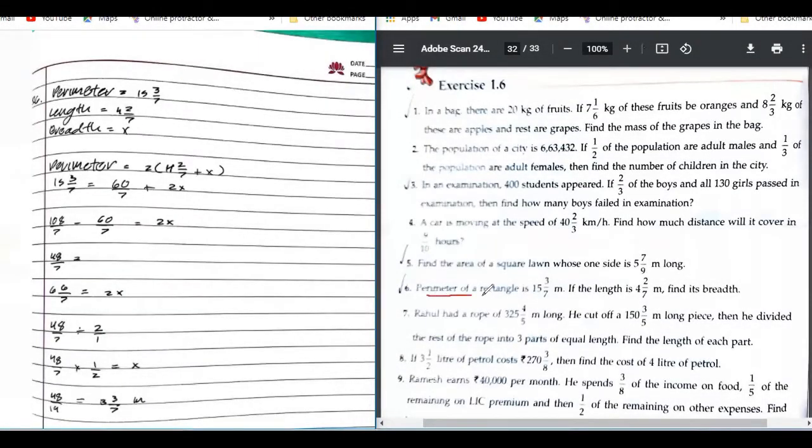Number 6. Perimeter of a rectangle is 15, 3 by 7. If the length is 4, 2 by 7, find the breadth.